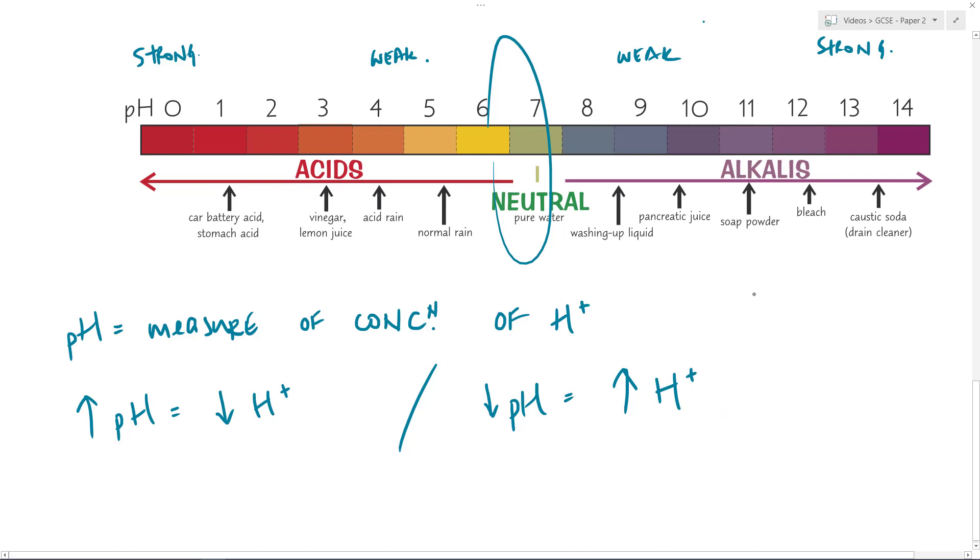The reason for that is simply how it's calculated, and for those that are interested, and this is not GCSE, the way to calculate pH is it is the minus log of the hydrogen ion concentration. Now that is very much A level. But if anyone's interested, that is the reasoning for it. So it's an inverse scale is the simple way to think of it.